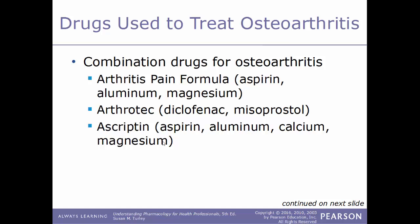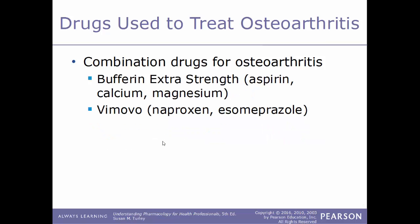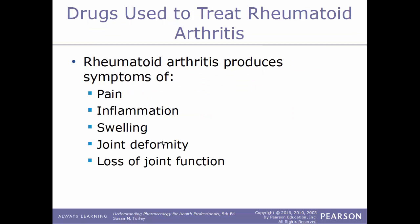Combination drugs used to treat osteoarthritis include Arthritis Pain Formula (aspirin, aluminum, and magnesium), Arthrotec (diclofenac and misoprostol), Ascriptin (aspirin, aluminum, calcium, and magnesium), Bufferin Extra Strength (aspirin, calcium, and magnesium), and Vimovo (naproxen and esomeprazole).